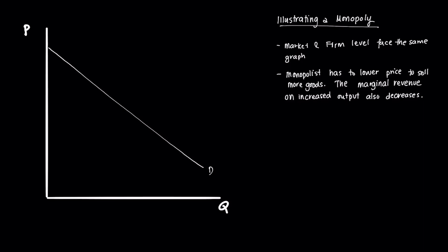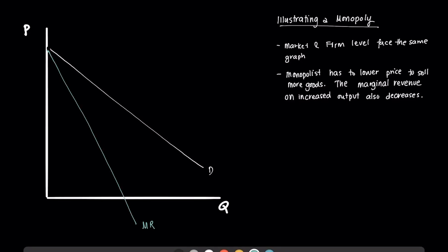Now suppose that the monopolist wanted to sell more units and wanted to increase its production. The monopolist, in order to do that, has to lower its price to sell more goods. And we assume that the marginal revenue on increased output will also decrease, and it will decrease about twice as much as compared to your regular demand. So this will be your marginal revenue curve.